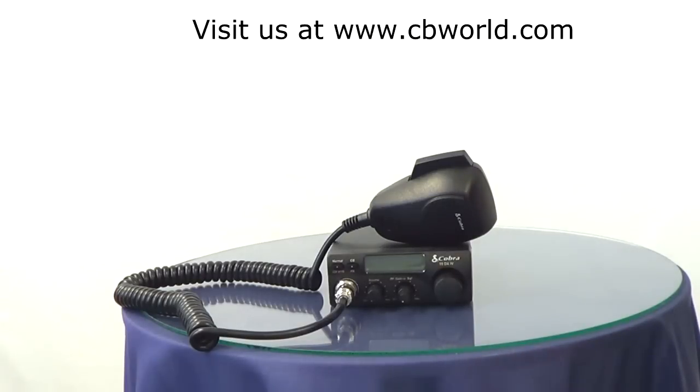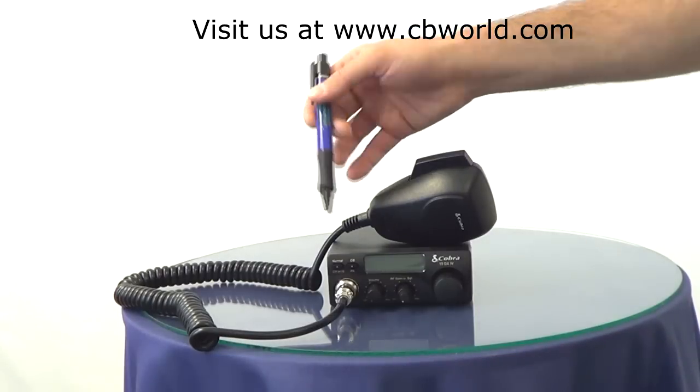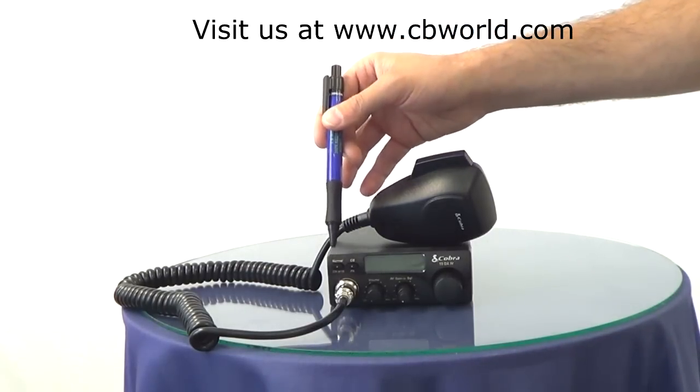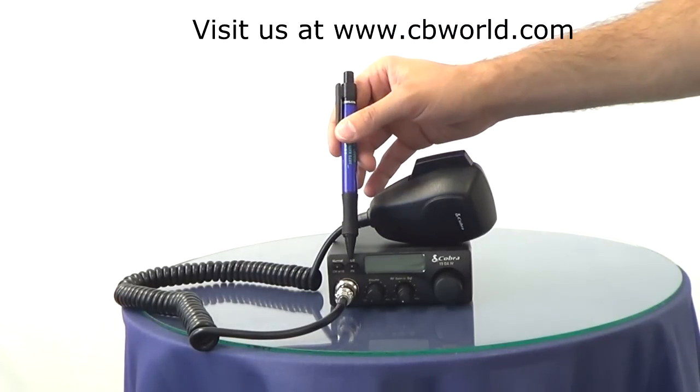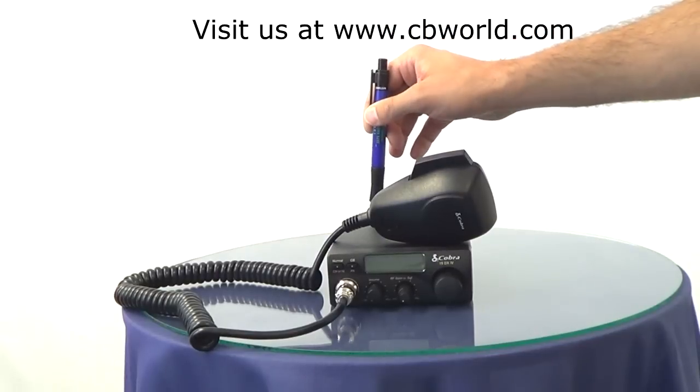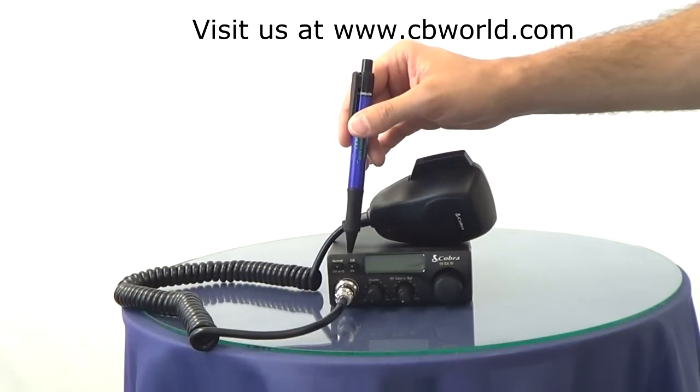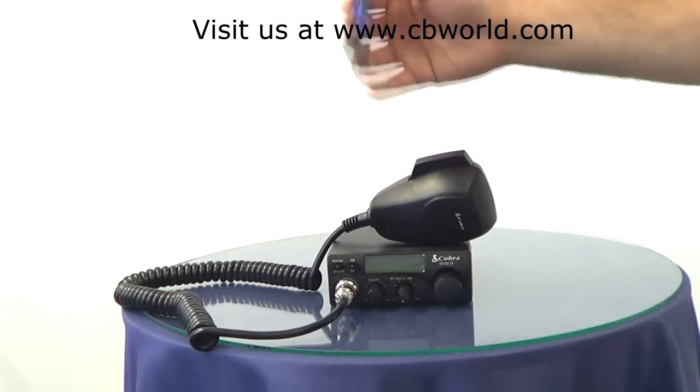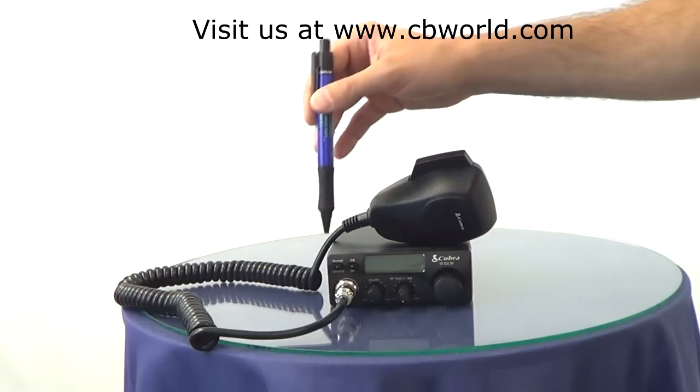It outputs the same 4 watts as larger CB radios. It has a few features on it. It has the instant channel 9 and 19. It's got a PA and I'll show you that on the back. You can plug in an optional PA speaker and communicate with people outside the vehicle if you want.